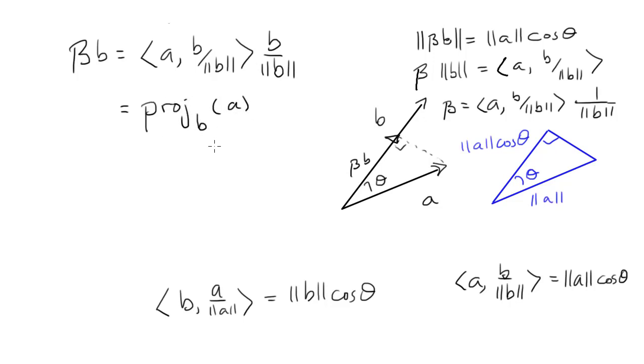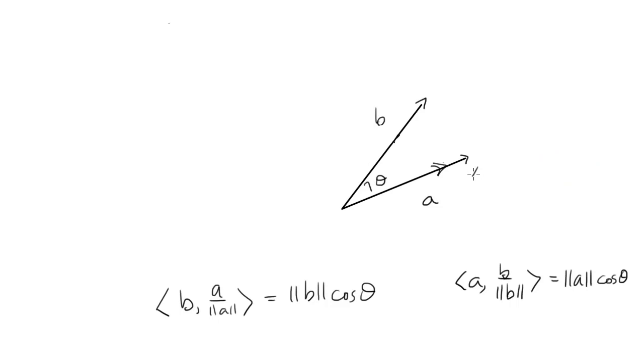I can do the exact same thing. Projecting b onto a. The projection is some scale of a. Get a triangle from the lengths of the vectors. Hypotenuse has length b. So that side has length b cosine theta. Which I can replace with the inner product.